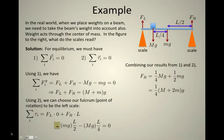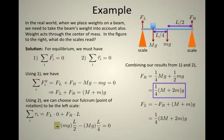And I know that the sum of the two forces has to equal the sum of these two masses times g, so I can also solve for what F sub L will be. F sub L will equal minus F sub R plus the sum of the masses times g, or a quarter times three capital M plus two little m times g.